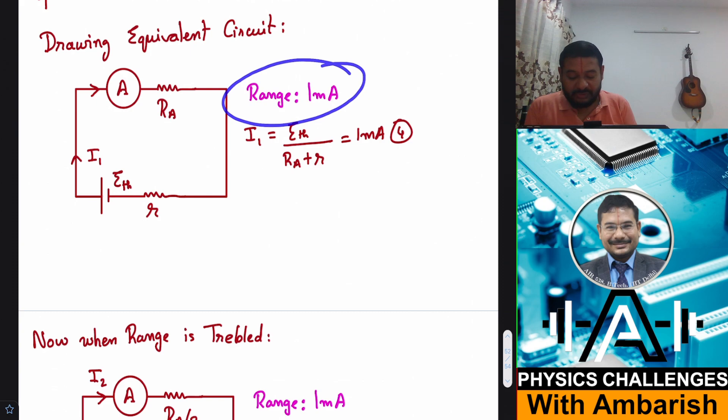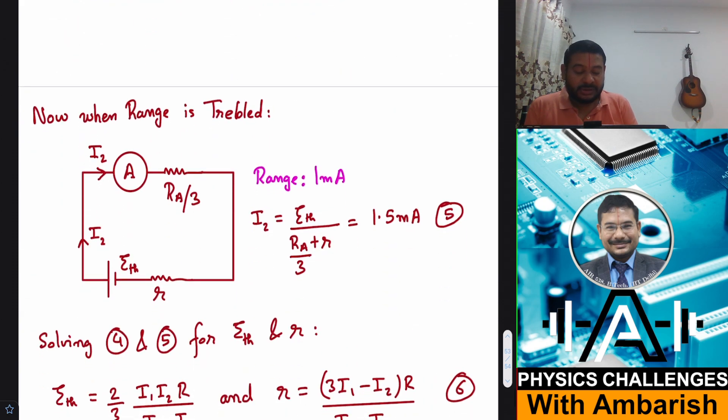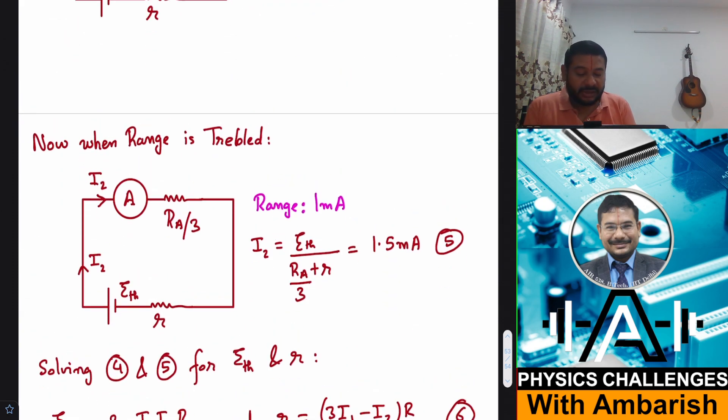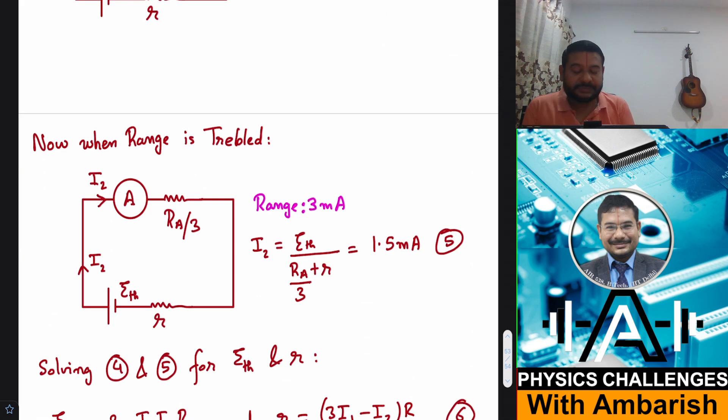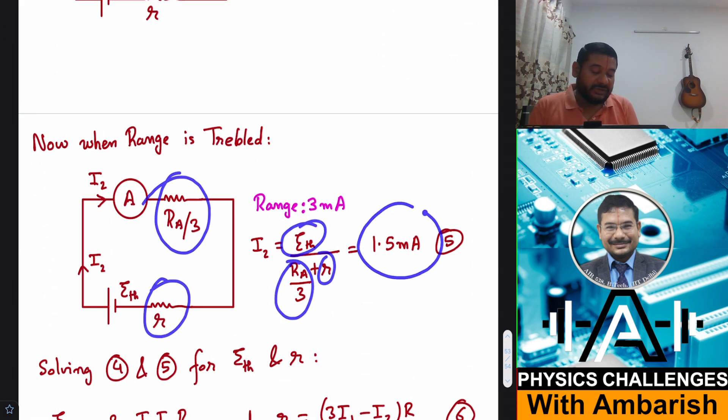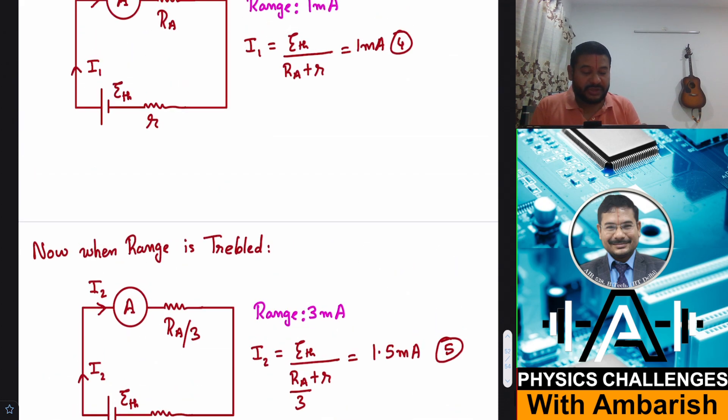Now what happens when you convert the range to 3 times? So now the range is 3 milliampere. Now when the range is 3 milliamperes, the effective resistance must have become 1 by 3 times as I showed you earlier. And now the current in the second case will be E_R divided by RA by 3 plus Thevenin resistance, and that is given as 1.5 milliamperes.